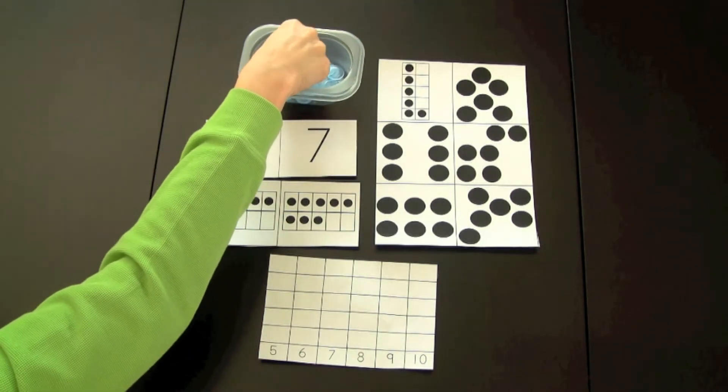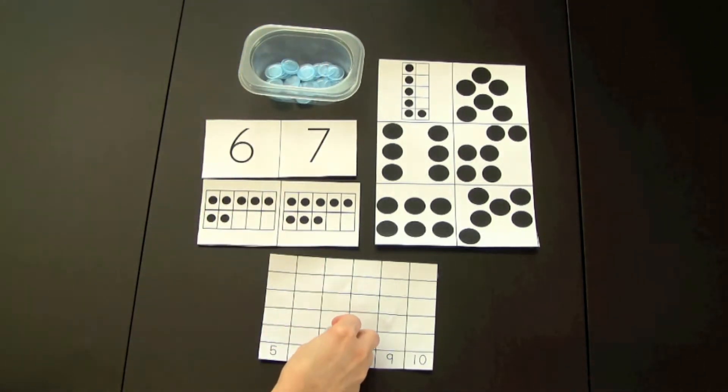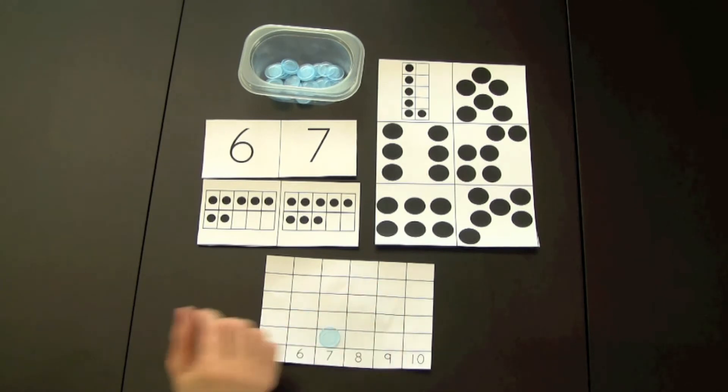...they would take a bingo chip and place it on the grid board. Each player would have their own grid board. The first person to have one of the grids completed would be the winner.